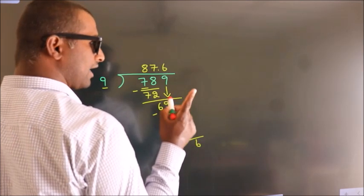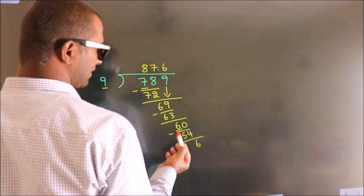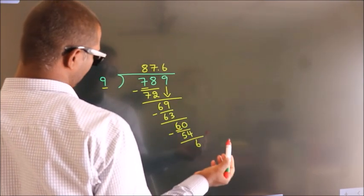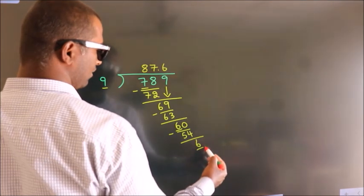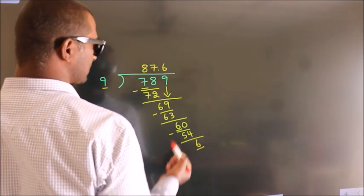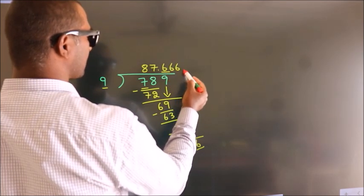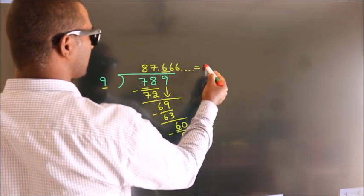Now you observe, we had 6 here and we got 6 again. That means this number keeps on repeating. So this is our quotient.